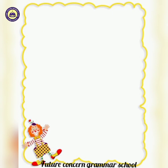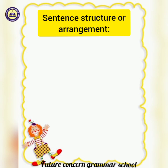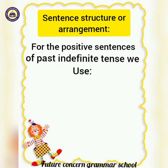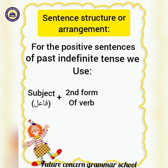We will see the arrangement of a sentence. In past indefinite positive sentences, first comes the subject (fa'il), then the second form of the verb is used, and lastly the object (maf'ool) is used.